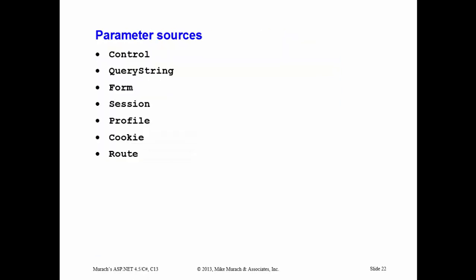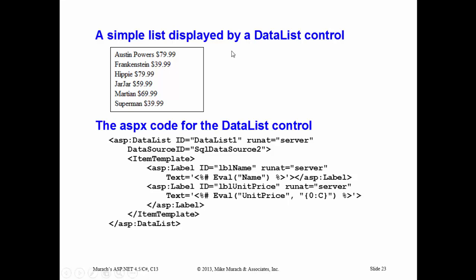There's a wizard for defining parameters that walks you through different parameter sources: control, query string, form, session, profile, cookie, or route. The data list control in Chapter 13 displays data by default using an item template — for every item, this is how data is displayed. It uses the eval keyword to get values like the name column or unit price. Later in the book they show how to convert the unit price to a currency format with a dollar sign and two decimal places using eval. All of this gets generated by the wizard, though you can type it in manually.